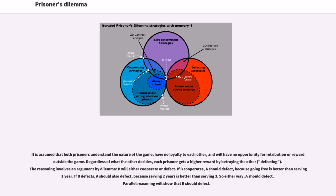Regardless of what the other decides, each prisoner gets a higher reward by betraying the other. The reasoning involves an argument by dilemma: B will either cooperate or defect. If B cooperates, A should defect, because going free is better than serving one year. If B defects, A should also defect, because serving two years is better than serving three. So either way, A should defect. Parallel reasoning will show that B should defect.